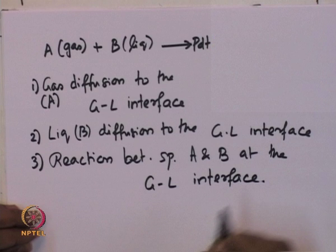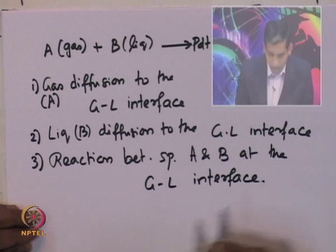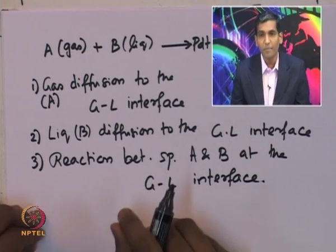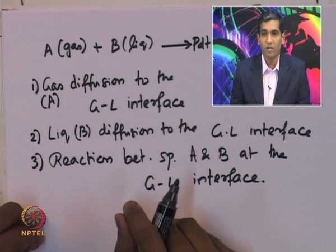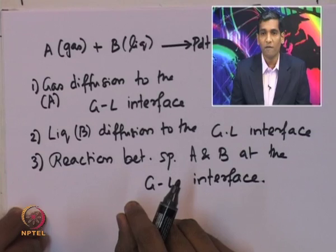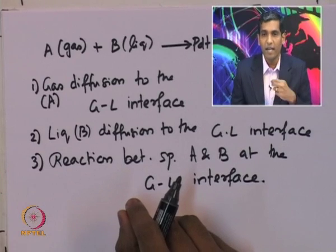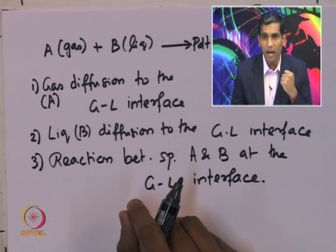The third step is the reaction between species A and species B at the gas-liquid interface. It has been assumed that the reaction occurs at the interface; however, the reaction need not be confined to the interface, as were the cases covered in lecture 26. These are the three processes which occur for the reaction to actually take place.